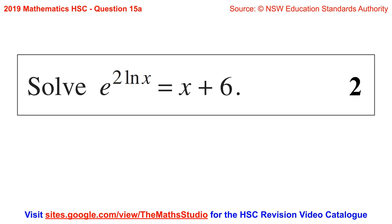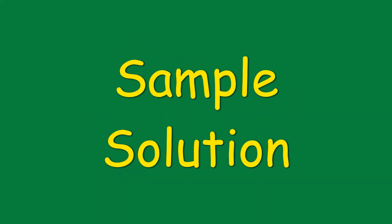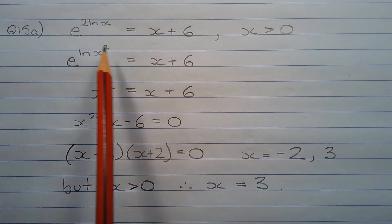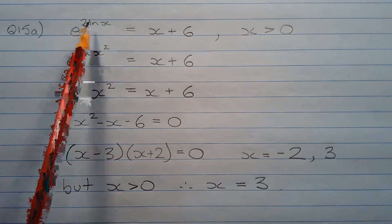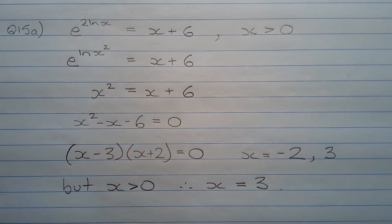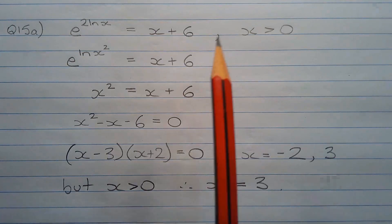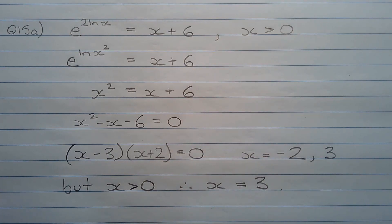Question 15a: Solve e to the power of 2 ln(x) equals x plus 6. The first thing to note in the equation is that only positive solutions are possible, and that's because of the term containing ln(x) on the left-hand side. ln(x), or the natural logarithm of x, is defined for positive values of x only, and that's why x is greater than zero.